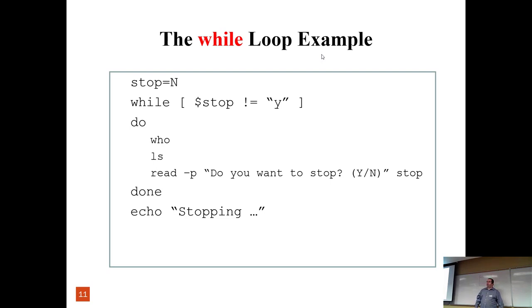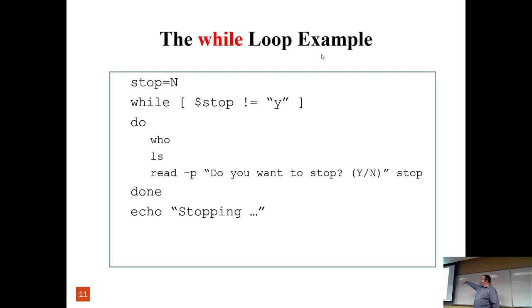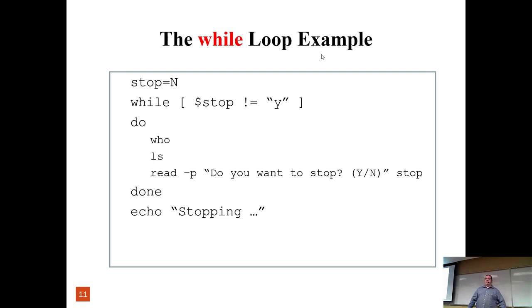Here's an example — a loop that constantly prompts a person whether or not they want to stop. It initializes the variable to 'end', then says: while 'stop' is not equal to 'yes', do — it outputs who you are, outputs a file listing, then reads a prompt asking 'do you want to stop, yes or no?' and feeds the value into 'stop'. The next statement is 'done', which ends the loop. Unless stop equals 'yes', it keeps going; if you say anything but 'yes', it continues.